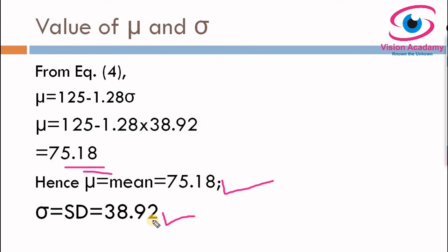Especially when mu and standard deviation are not given, think about the inverse cumulative distribution function. Using two values given as percentages, you can find mu and standard deviation. Thank you so much for watching. Please do subscribe to my Vision Academy YouTube channel. Thank you.